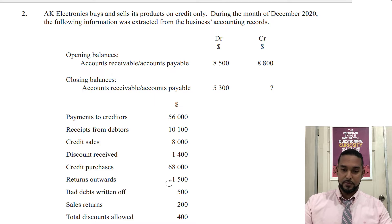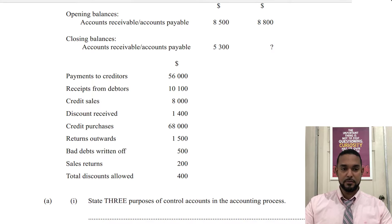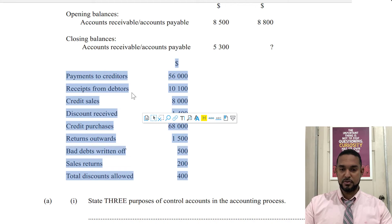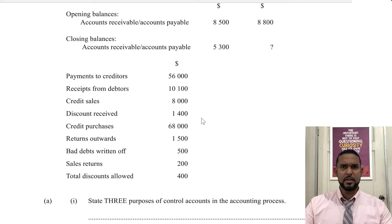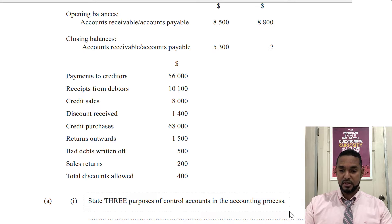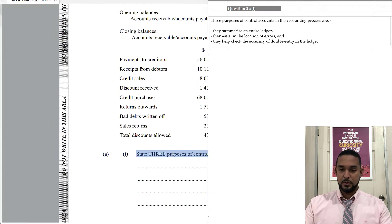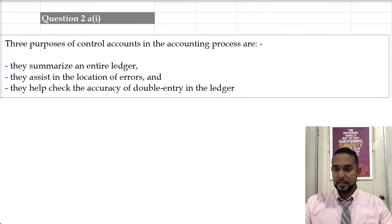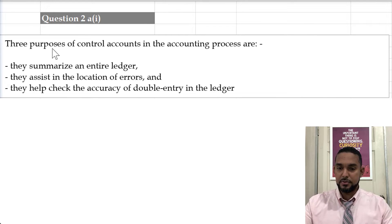The information in the middle — payments to creditors, receipts from debtors, and so on — will be used to populate control accounts. But the first thing the question asks is to state three purposes of control accounts in the accounting process. Let's go across to the solution. The three purposes of control accounts are: they summarize an entire ledger.